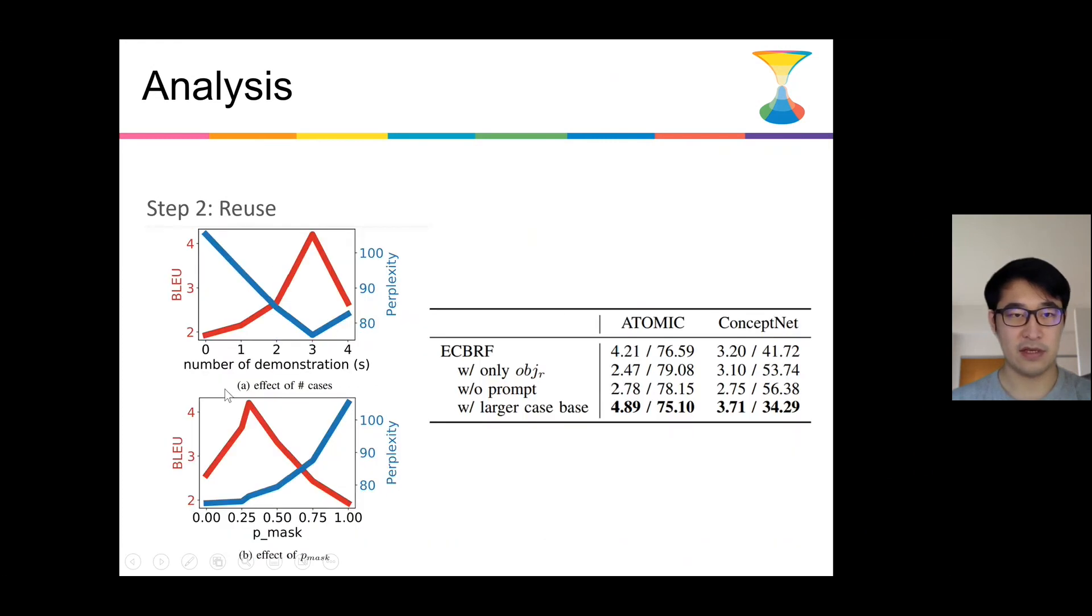And for reuse steps, we analyze the best choice for the number of demonstrations and the P-mask. P-mask is the probability of masking for masking out in-context demonstrations during training. And we also analyze when the retrieved cases only include object, the performance will be lower. And also without prompt as instructions to the models, like which input part functions as what, without this prompt, ECBRF also performs worse.